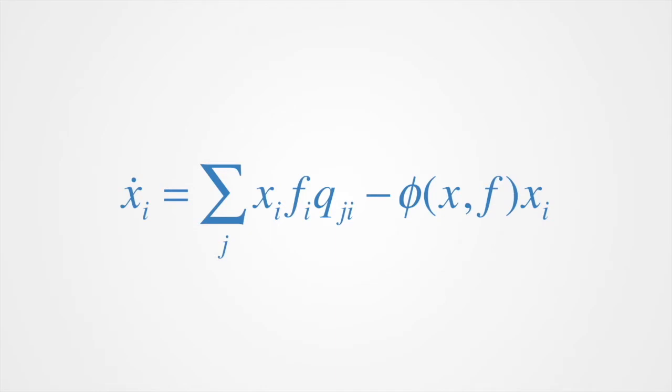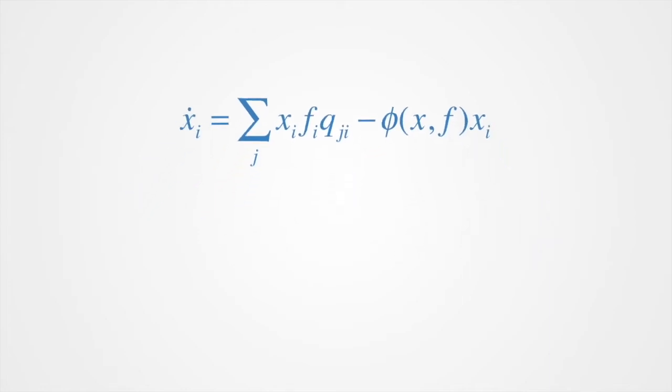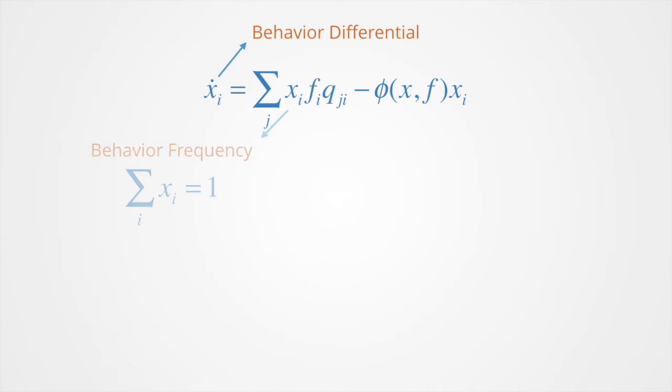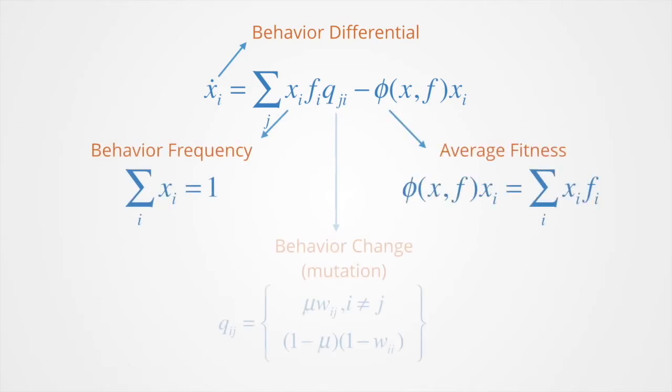The replicator equation is the first and most important game dynamic studied in connection with evolutionary game theory. The equation and other deterministic game dynamics have become essential tools over the past 40 years in applying evolutionary game theory to behavioral models in biology and the social sciences.